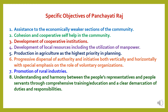Now we will go through some specific objectives of Panchayati Raj. First, assistance to the economically weaker sections of the community. Second, cohesion and cooperative self-help in the community. Third, development of cooperative institutions. Fourth, development of local resources including the utilization of manpower. Fifth, production in agriculture as the highest priority in planning. Sixth, progressive dispersal of authority and initiatives both vertically and horizontally with a special emphasis on the role of voluntary organizations. Seventh, promotion of rural industries. And eighth, understanding and harmony between the people's representatives and people's servants through comprehensive training, education and a clear demarcation of duties and responsibilities.